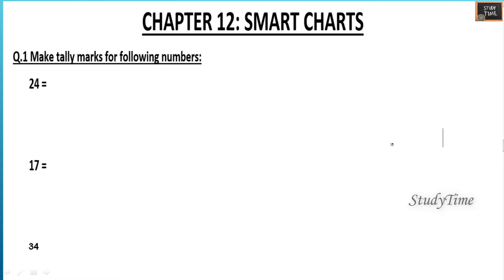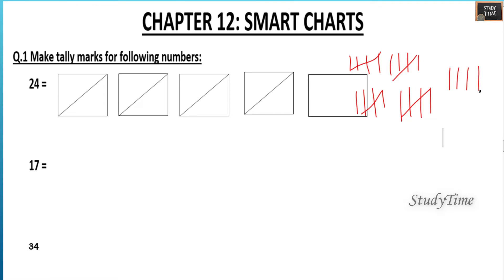First question: make tally marks for following numbers. So here first number is 24. In two ways you can represent: so 1, 2, 3, 4, 5, 1, 2, 3, 4, 5, 1, 2, 3, 4, 5. So this is 20, 21, 22, 23, 24. Another way you can represent is in this form also. This is 5, 10, 15, 20, and 4 lines: 21, 22, 23, 24.